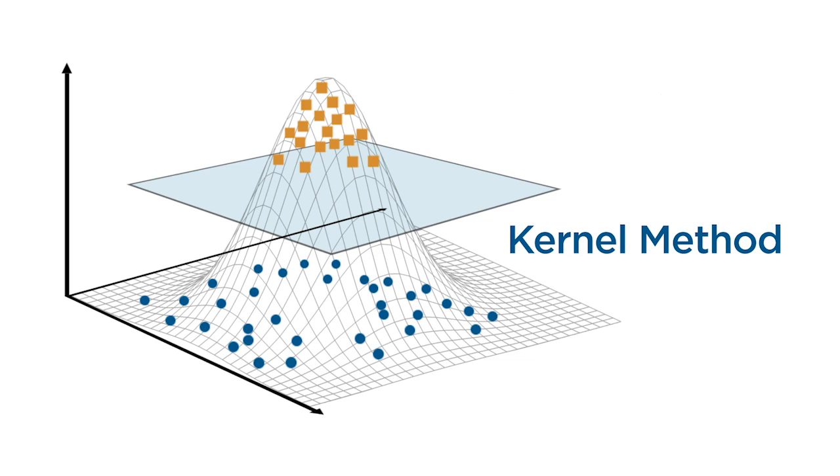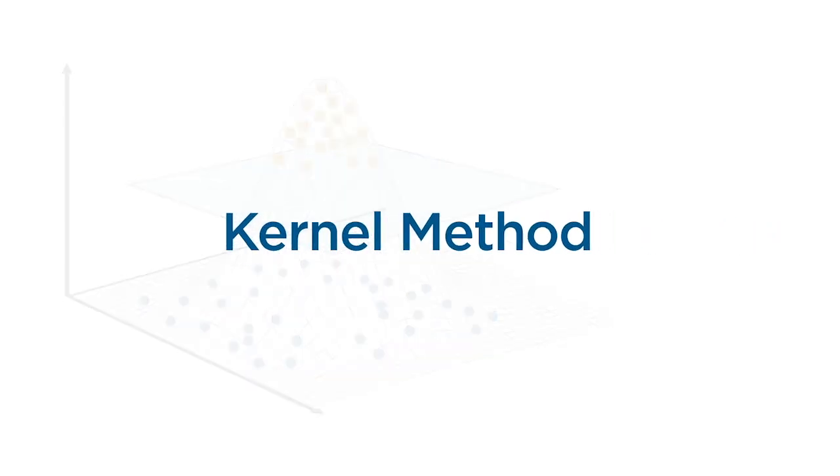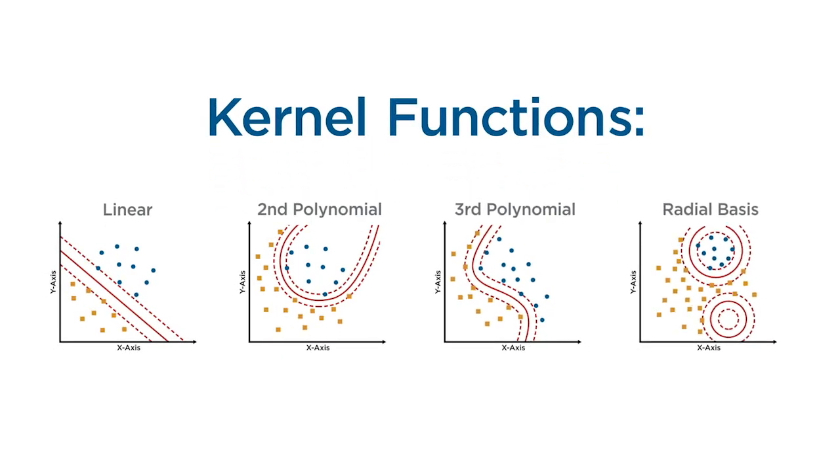With the kernel method, you map data into a higher dimensional space, where the data is linearly separable. The mathematical function used for the transformation is known as the kernel function, and there are different types of kernel functions.